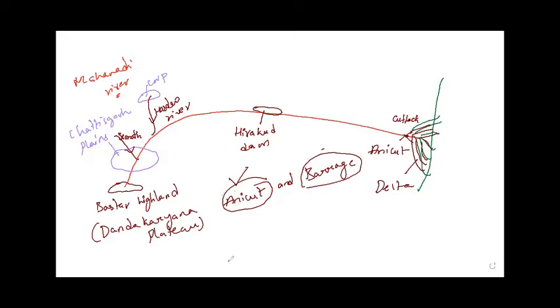So anicut means suppose there is a stream flowing here. If there are high rainfall in the source region or in the upper path, volume of the water increases. Now if volume of the water increases, it's going to flood these nearby regions. To avoid that, we divide or divert that into different paths. Now if the volume of water increases, they get diverted in multiple ways, so we avoid flooding. This is called anicut.